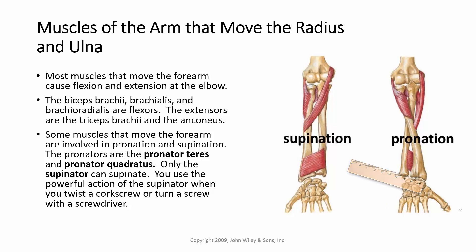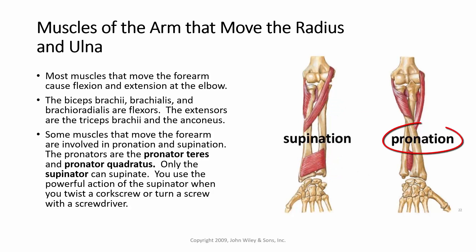Again, supination means you turn your hand over like you're holding a bowl of soup. Pronation is showing the back of your hand. You can see here the pronator teres and the pronator quadratus muscles — when they contract, pronation happens. Here's a good view of the supinator; when it contracts, you're going to get supination.